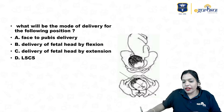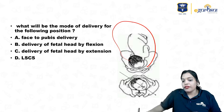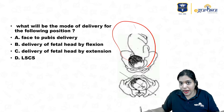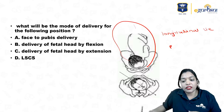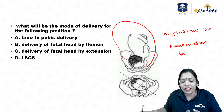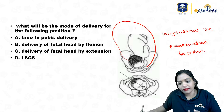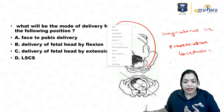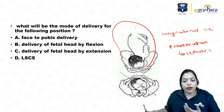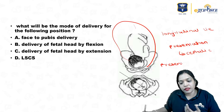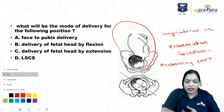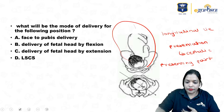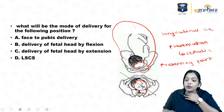Now let us apply this to the picture. Here we have a longitudinal lie — when the long axis of the fetus corresponds to the maternal spine it is called longitudinal lie. What is the presentation? The part of the baby occupying the lower uterine pole is the presentation — here that is the fetal head, so presentation is cephalic. When I do a PV examination, whatever I palpate is the presenting part. Here I am seeing the baby's face, so the presenting part is the face.